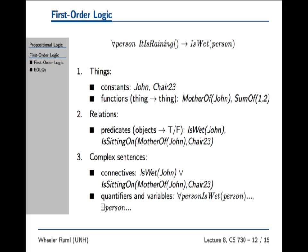So like John is a constant and chair 23 is a constant. A function takes a thing to a thing. So like mother of John is a thing. A predicate takes things to booleans. Like is wet John. That's either true or false. Everyone get the difference here between a function that takes a thing to another thing and a predicate that takes a thing to a boolean.